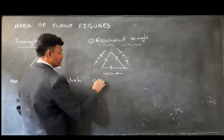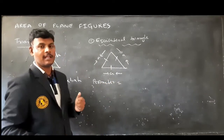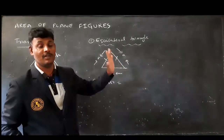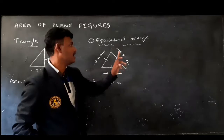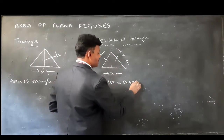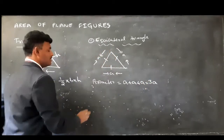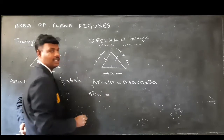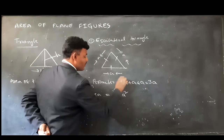Then, the perimeter. The perimeter of a triangle is nothing but the sum of the lengths of all sides. Here, how many sides are there? Three sides. So it is A plus A plus A, which is equal to 3A. Then, the area of an equilateral triangle is root three by four A square.